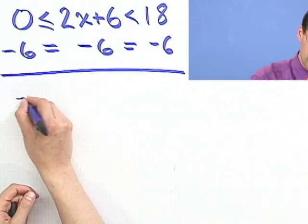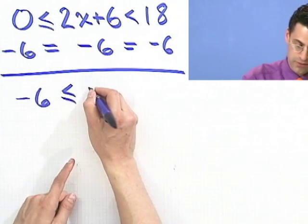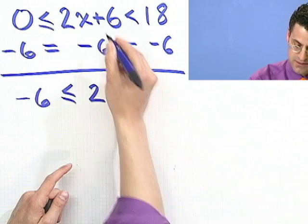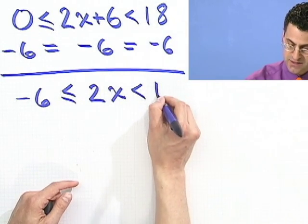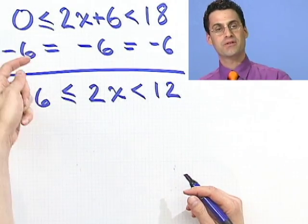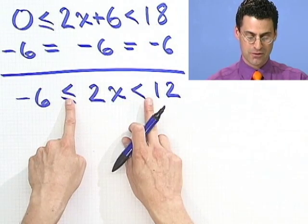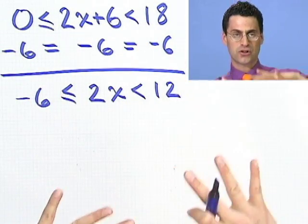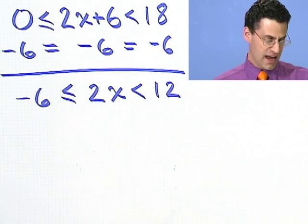And now if I combine, I see negative 6. And I have the same inequality, less than or equal to 2x, because this cancels. And now less than, and then 18 minus 6 is 12. Do you see how I'm performing the arithmetic? But I'm doing all the steps sort of at once. Very carefully, the inequalities stay the same as they were before. But I can do arithmetic to all of them at once, and the balance of power stays intact.